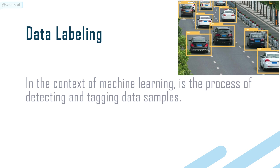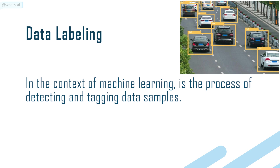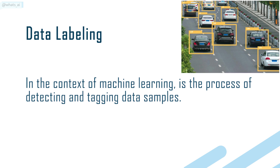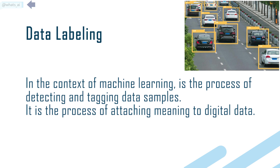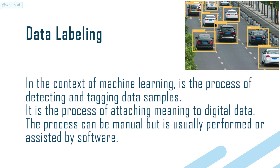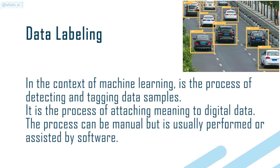Data labeling in the context of machine learning is the process of detecting and tagging data samples. It is the process of attaching meaning to digital data. The process can be manual but is usually performed or assisted by software.